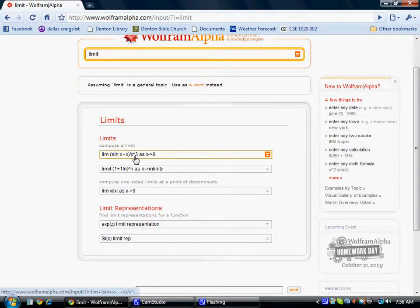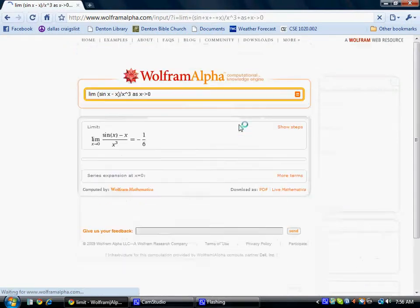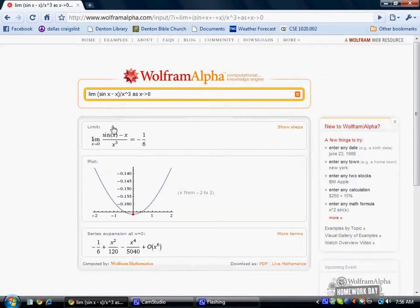This is basically how you write limit and then whatever function you want as something goes to something. Here x goes to zero or approaches zero. Hit equals and it will show you an answer.